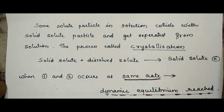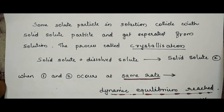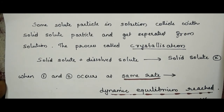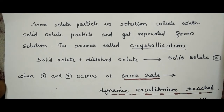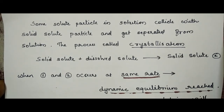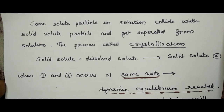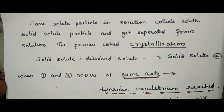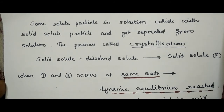Some solute particles in the solution collide with the solid solute particles and get separated out of the solution. This process is known as crystallization, which is just opposite to dissolution. A stage is reached when the two processes occur at the same rate, and the state of dynamic equilibrium is reached.